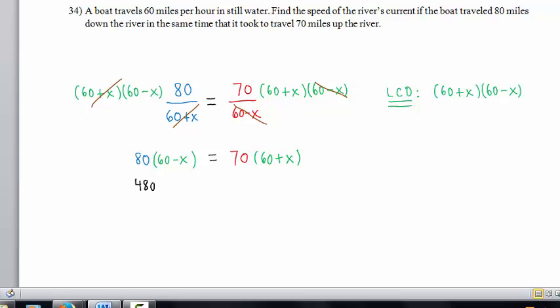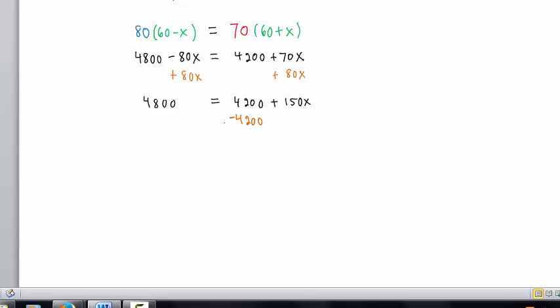4,800 minus 80x after distributing equals 4,200 plus 70x distributing on the right-hand side. Let's add 80x to both sides. We have 4,800 equals 4,200 plus 150x. Subtract 4,200 from both sides. 600 equals 150x. And dividing both sides of the equation by 150, we get that x, which is the speed of the current, is 4 miles per hour.